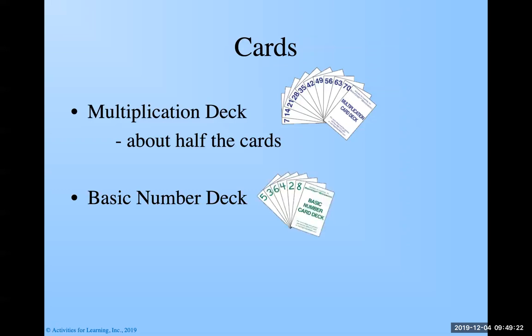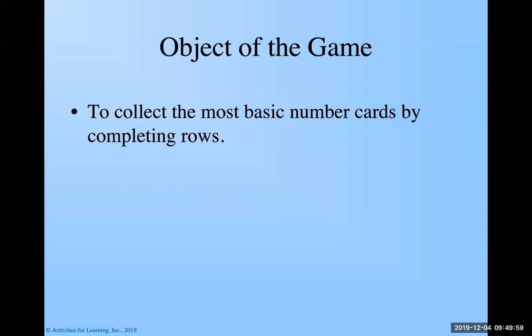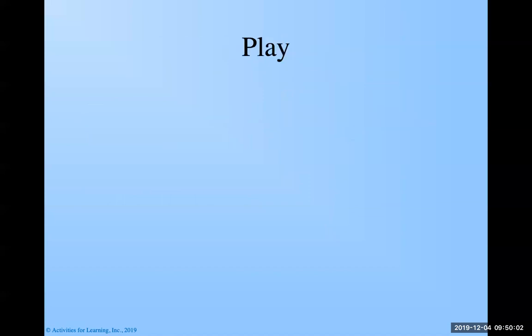Then it says to use the basic number decks. These are just the numbers from zero to 10. And in the deck, they come 12, there's 12 of each number. When we actually package them, if you're buying them brand new, we package them in two packs, two groups. One group has six of each number. The other pack has six of each numbers. The two decks, the two halves equal the whole deck. So the whole deck has 132 cards in it. Now for this game, we're going to use all of them, but the zeros. So our object of the game is to collect the most basic number cards, the green ones, by completing rows. So let's go see what this looks like when we're playing it.